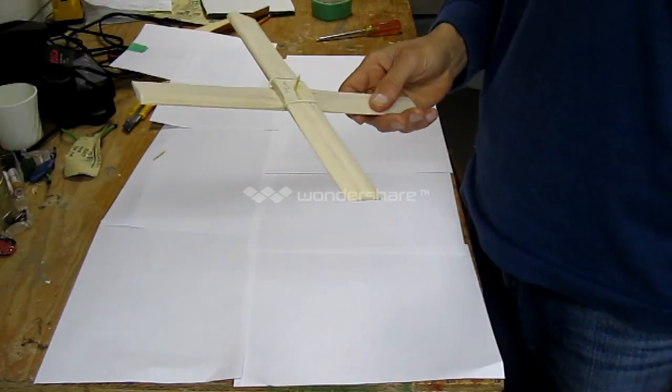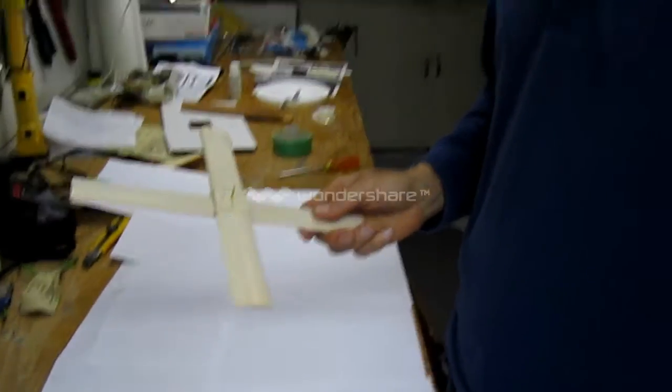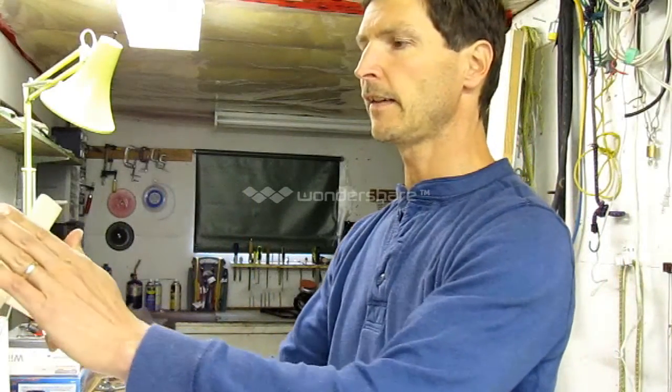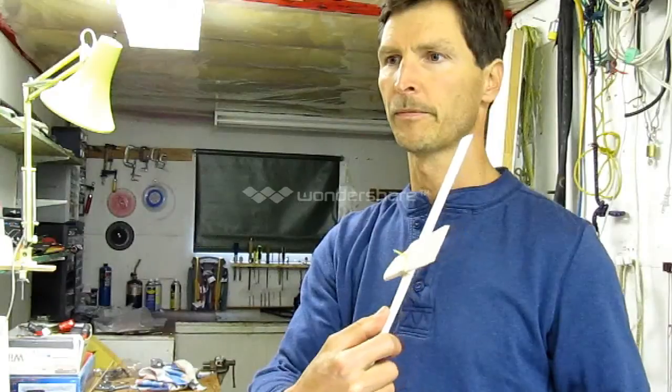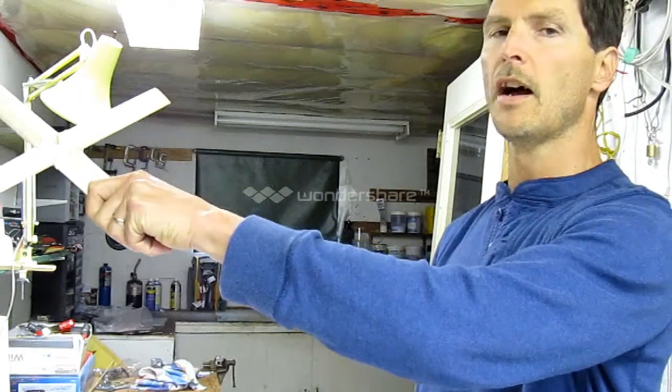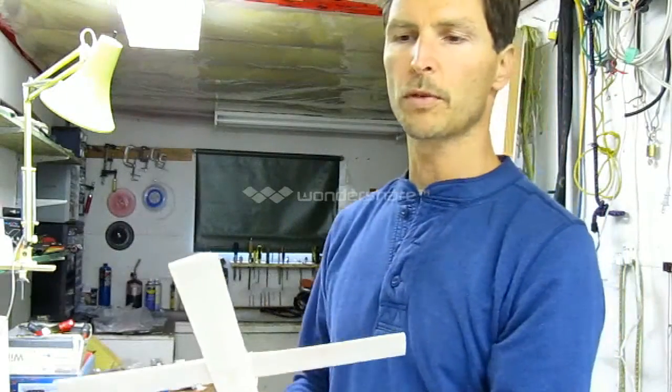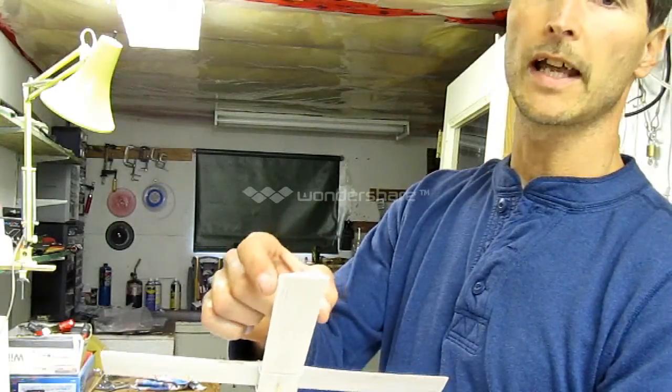But I should first point out that this boomerang is designed for a right-handed thrower, because a right-handed thrower will throw it like this and the lift is like this to the left so the boomerang will curve around back towards the right-handed thrower. A left-handed thrower would have to hold the boomerang like this to throw it, which is awkward. Ideally they would be able to throw it like this, but you can see with this particular boomerang they would be throwing it backwards. The trailing edge would be leading.